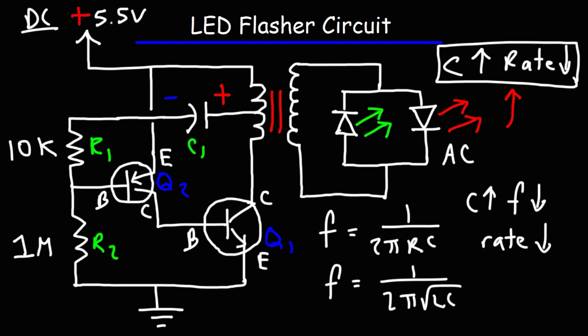So all you need to do is adjust C1 to the appropriate setting of how fast you want your LED to flash. So that's basically it for this video. Now you know how to design an LED flasher circuit.